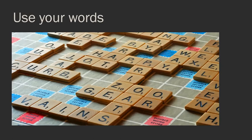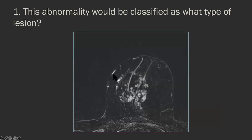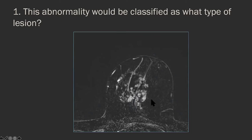Now we'll bring up some polls to see if you've learned how to apply the terminology. First poll: this lesion here — focus, mass, or non-mass enhancement? The vast majority, 91%, got that this was non-mass enhancement. This is non-mass enhancement — there are lots of areas of non-enhancing parenchyma in between. I would probably call this regional and heterogeneous — it could even move towards clumped perhaps. There is more than a few shades of grey when reading these.